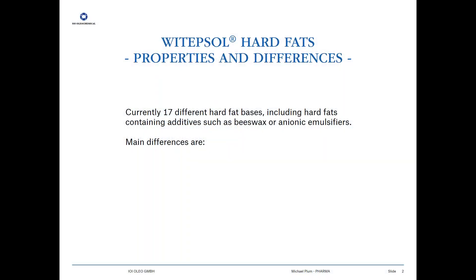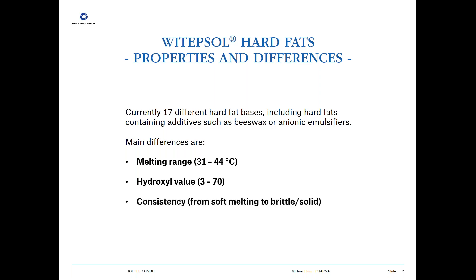Currently we have 17 different hard fat bases, including those containing additives such as beeswax or anionic emulsifiers. Today I would like to focus only on the hard fats without additives. The main differences are the most important parameter, melting range, which spans from 31 degrees up to 44 degrees. The second important parameter is the hydroxyl value, ranging from 3 up to 70 maximum. The third is the consistency, ranging from soft melting to brittle and solid.